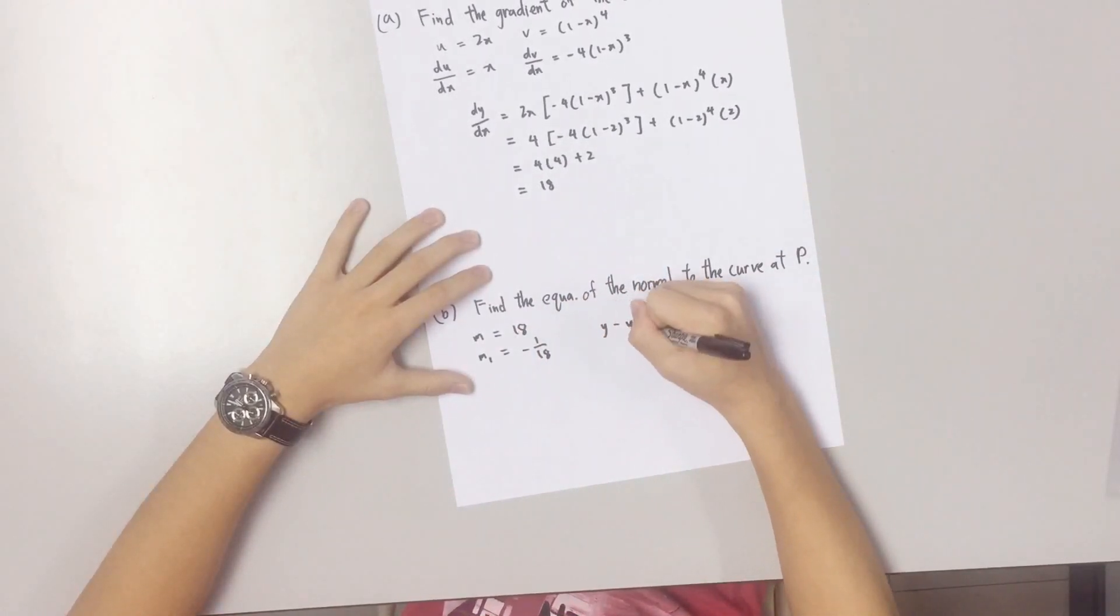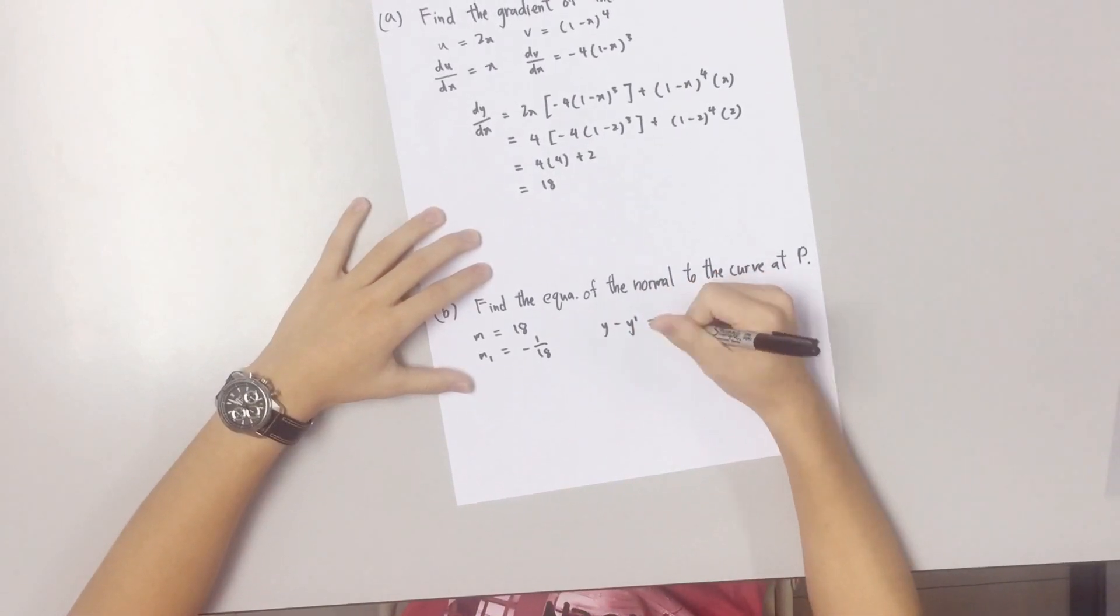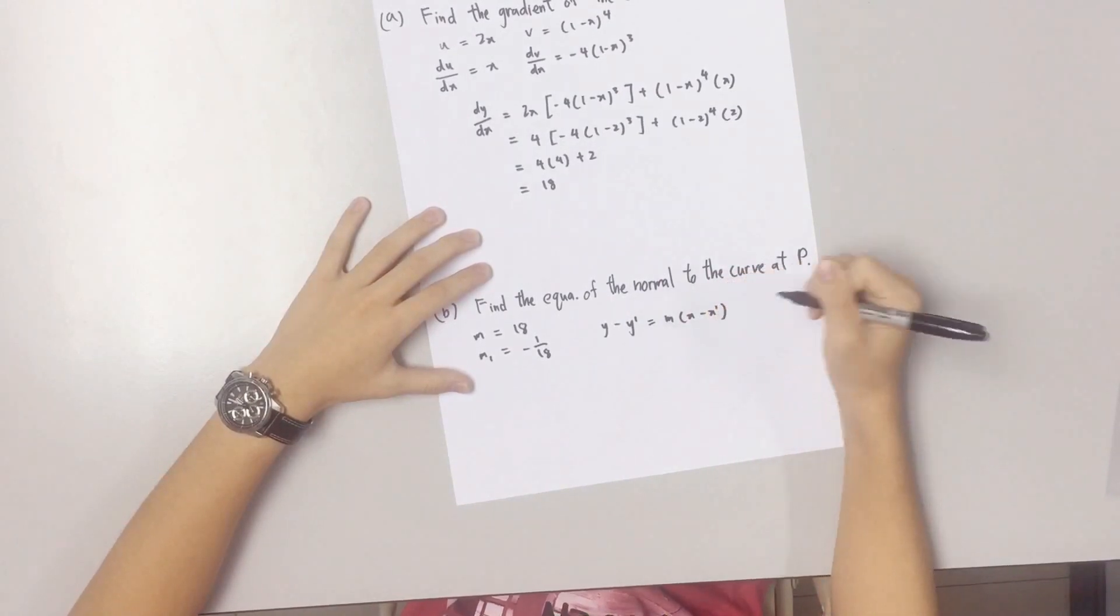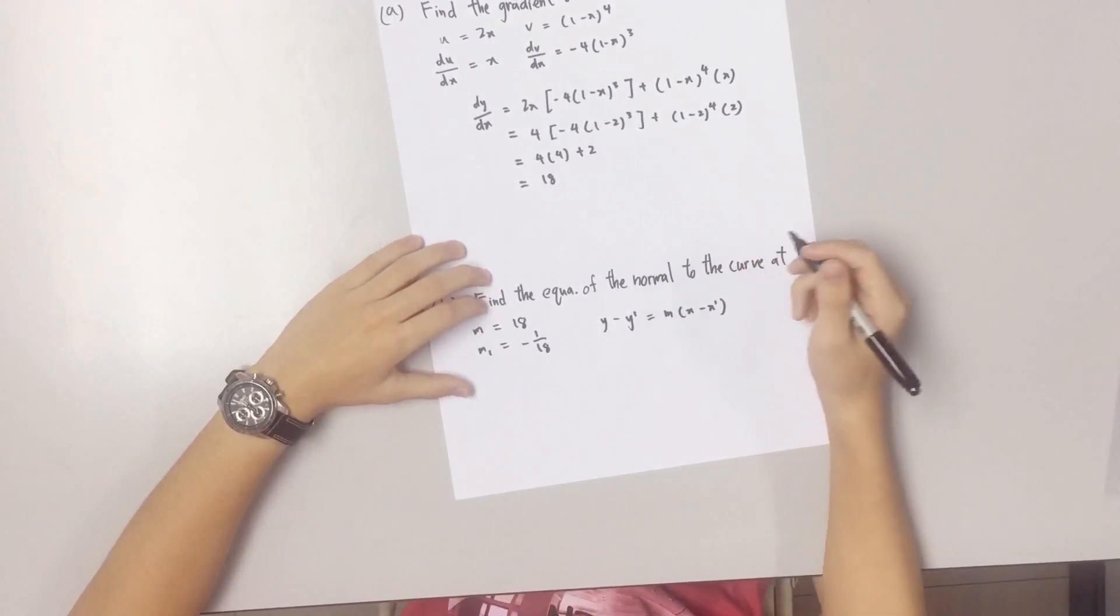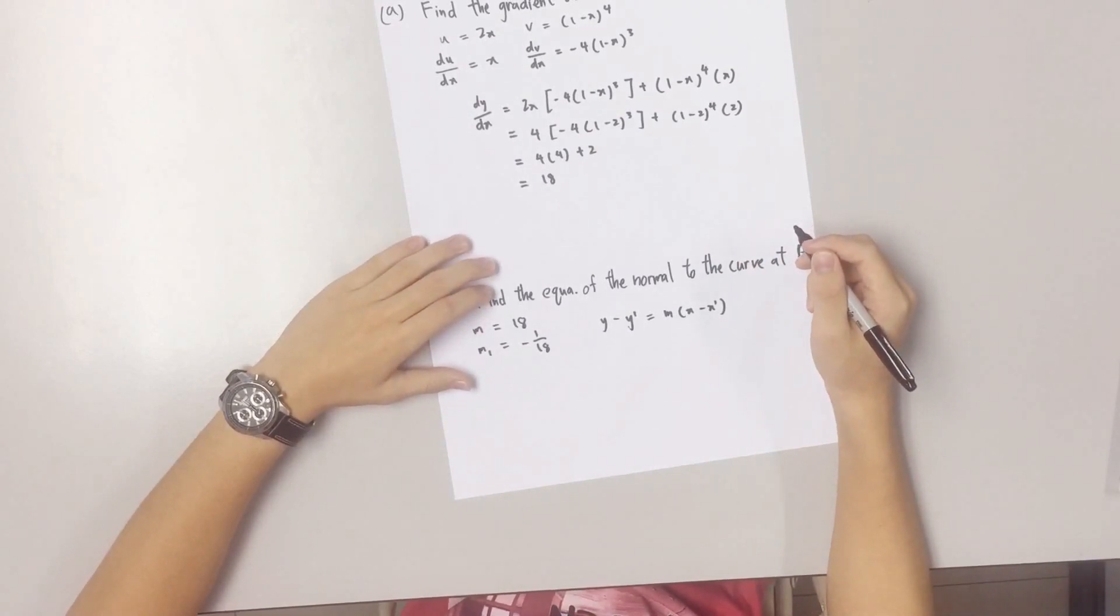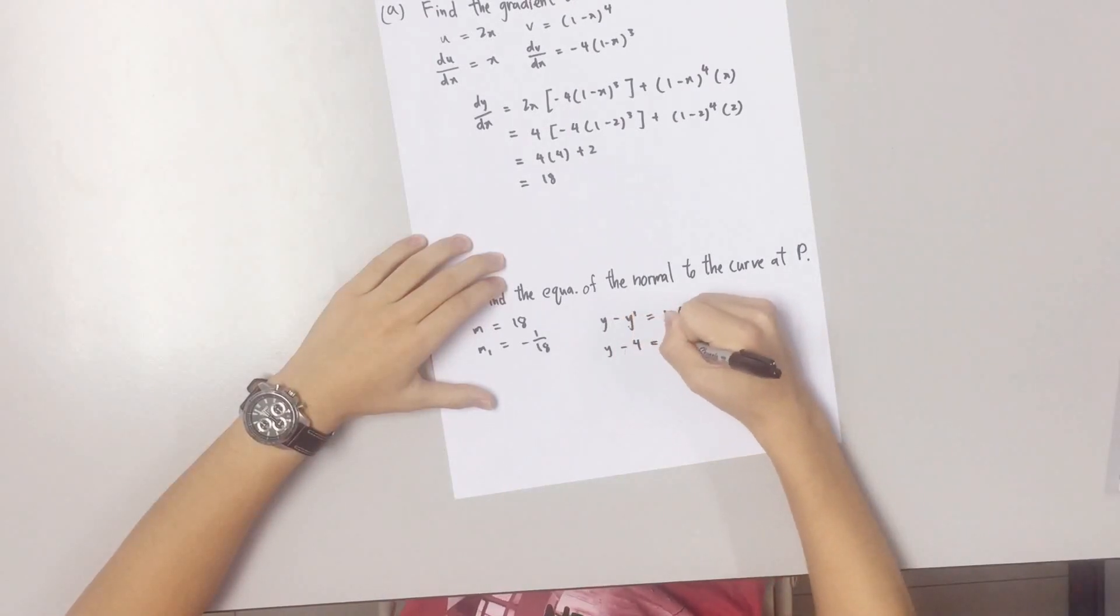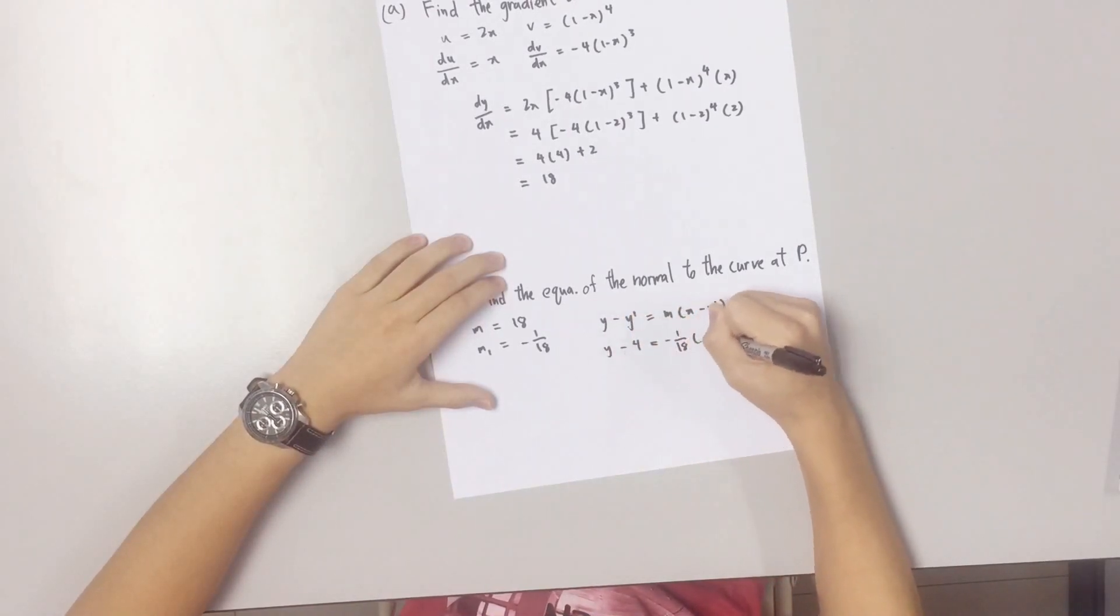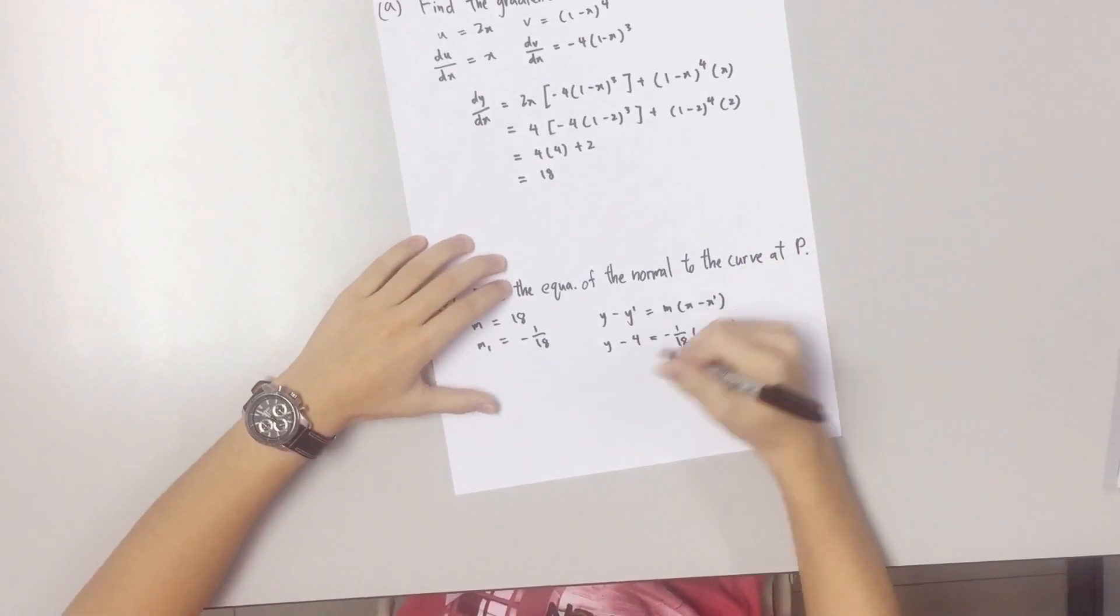Use this formula to get the equation of the normal to the curve at P. Now, you sub the coordinates of P into the formula and you simplify it.